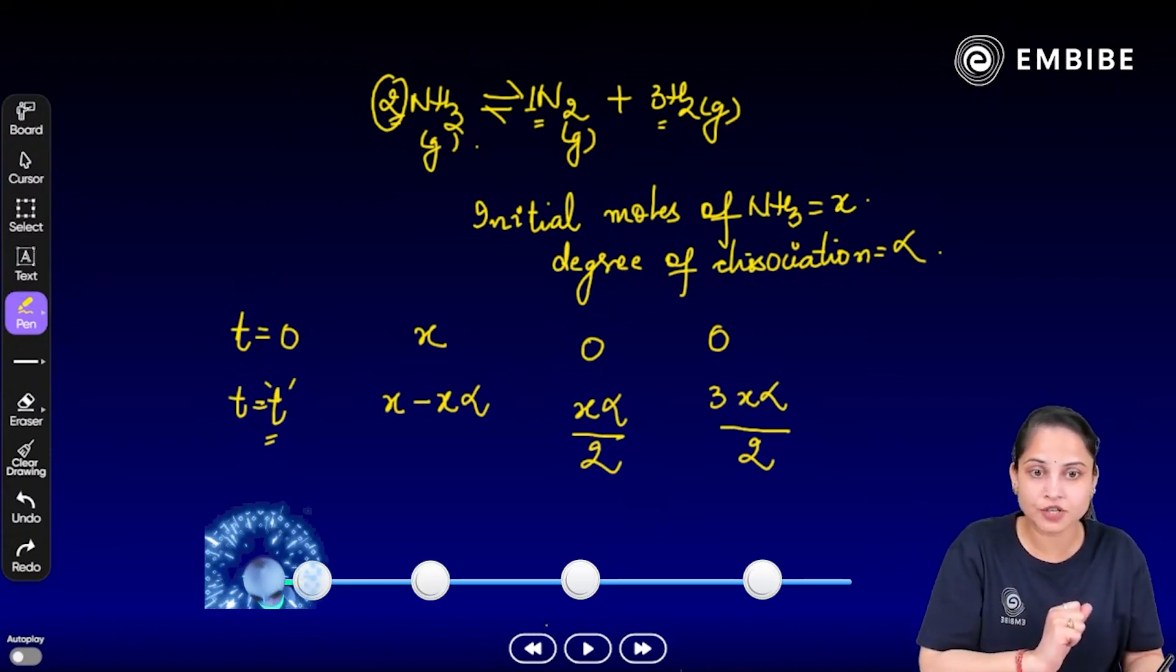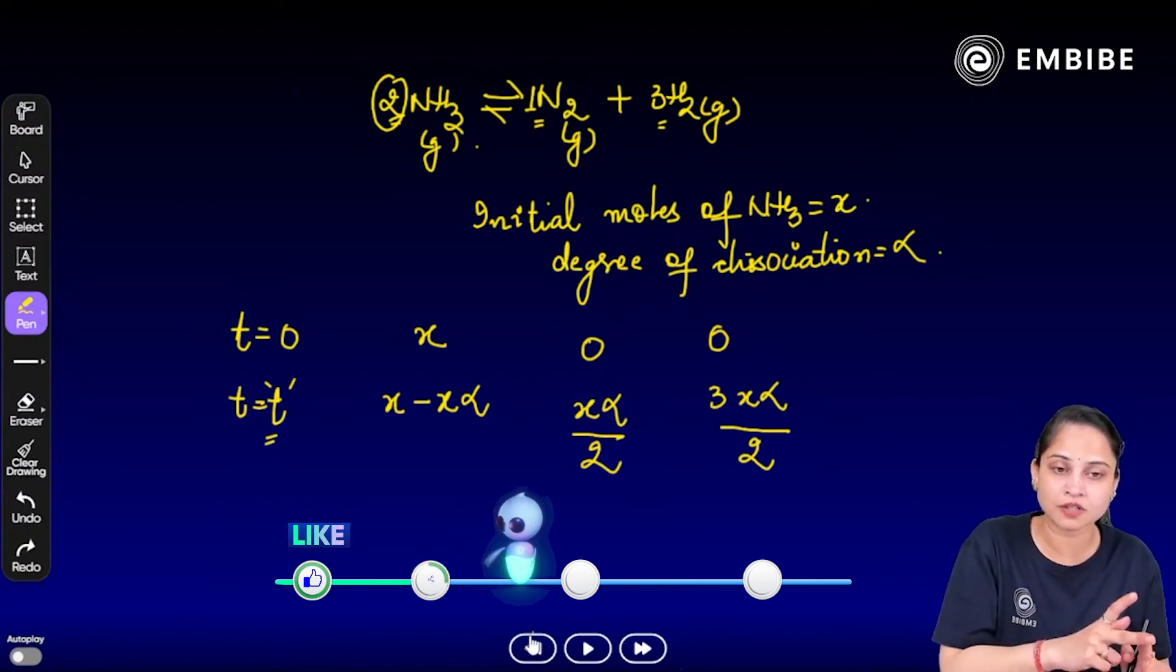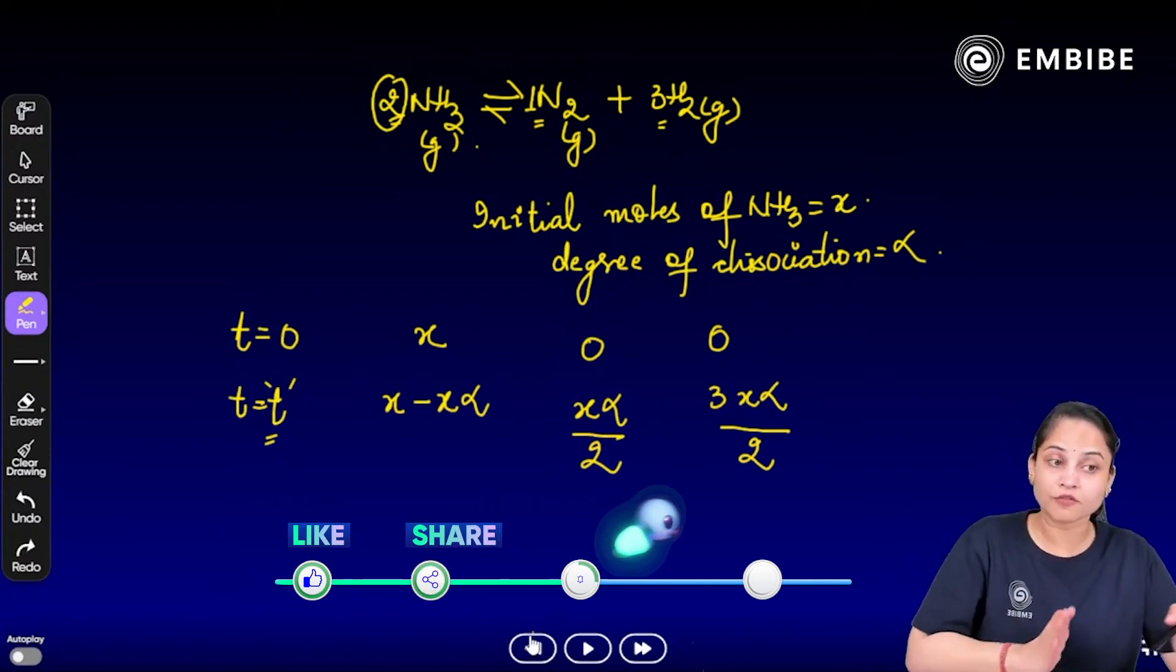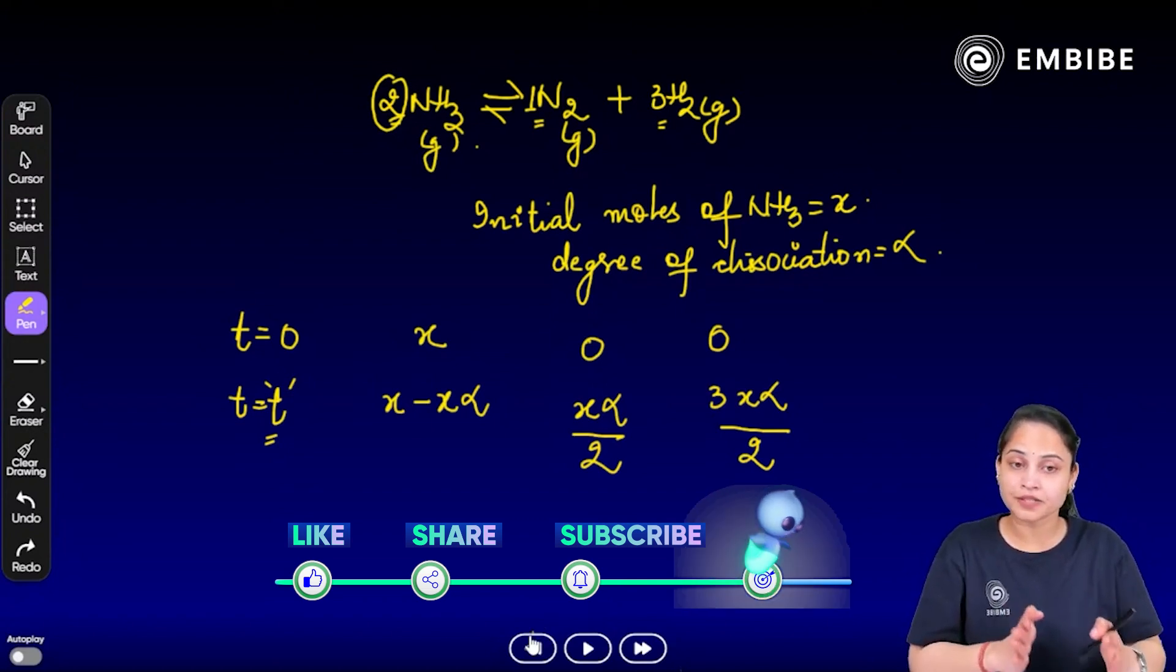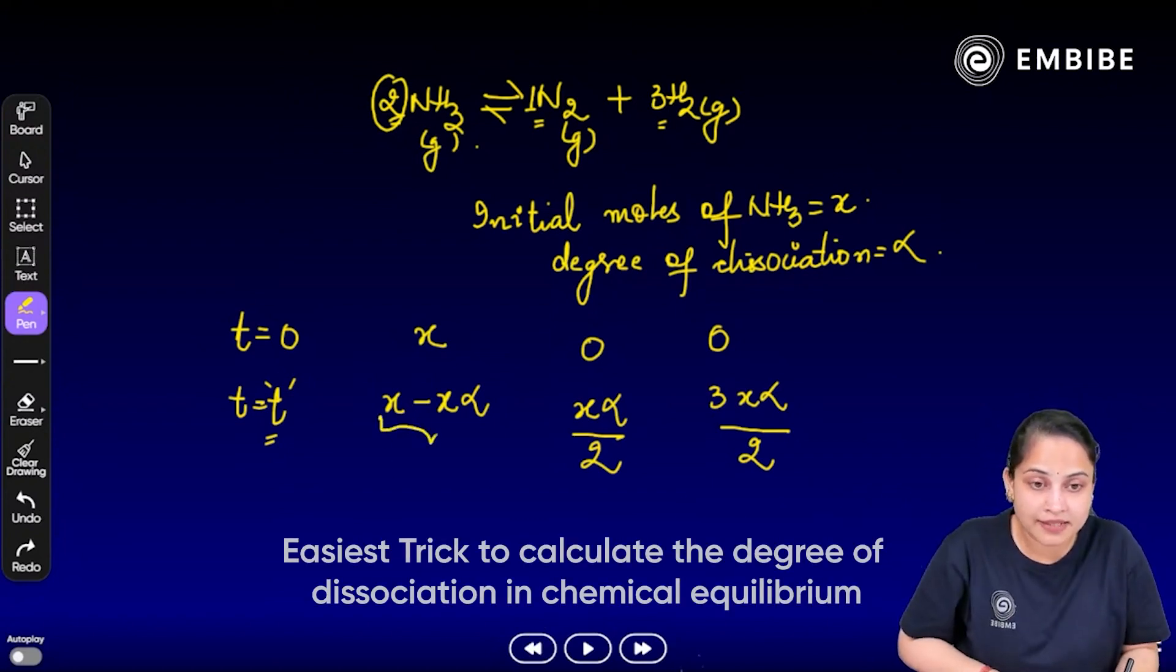Do you understand this trick? What is the trick behind the degree of dissociation? How to calculate the number of moles at time t? It's x minus x alpha.